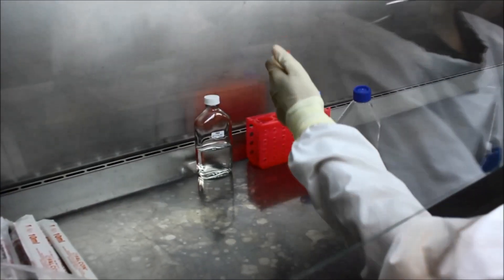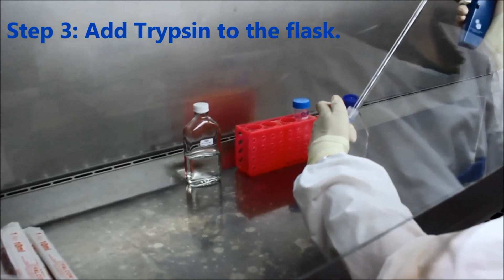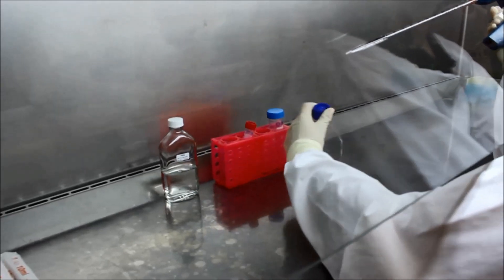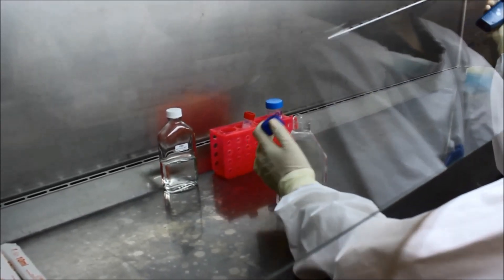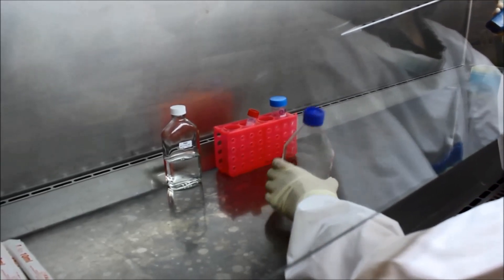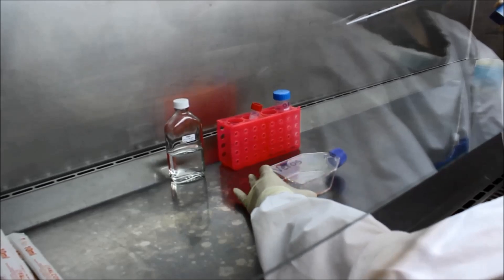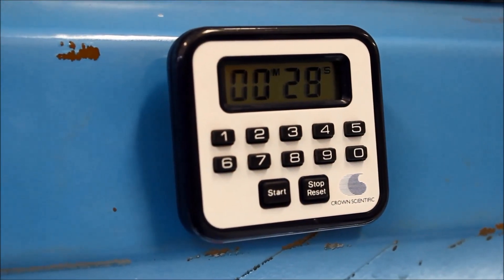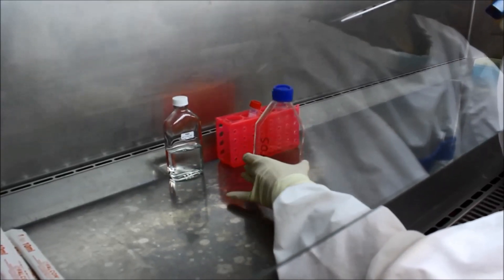Add five mils of PBS with trypsin and EDTA to the flask, and then leave flat for 30 seconds to allow the cells to absorb the trypsin. After 30 seconds, remove and discard the trypsin.